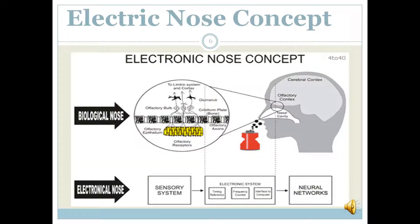What is the e-nose concept, or how does an electronic nose work? An electronic nose is a mechanism that works on the same principles as a human sense of smell. When we breathe, the volatile compounds suspended in the air are detected by the olfactory receptors, which send information about the compounds to the brain where they are identified as a particular smell. In the electronic nose, the olfactory receptors are sensors placed in a measuring chamber.